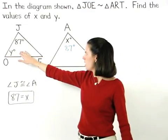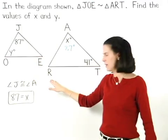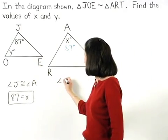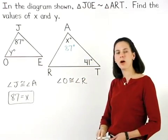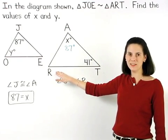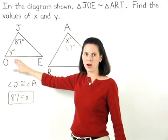To find the value of y, we know that the corresponding angles O and R are congruent. The problem is, we don't know the measure of angle R, and we need to know the measure of angle R in order to find the value of y.